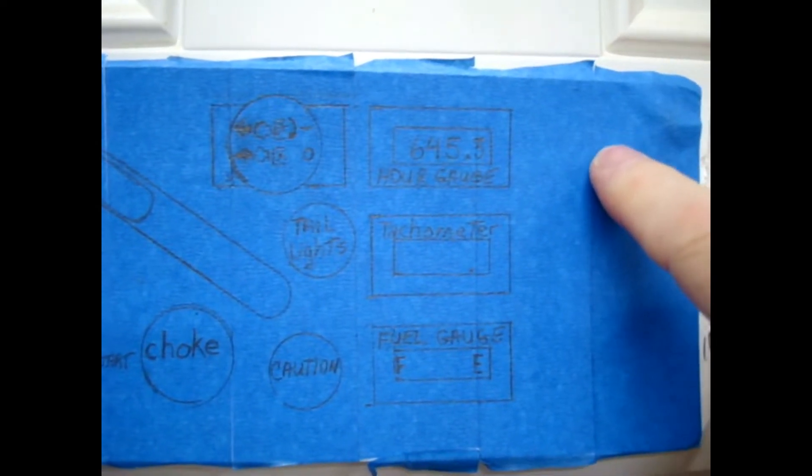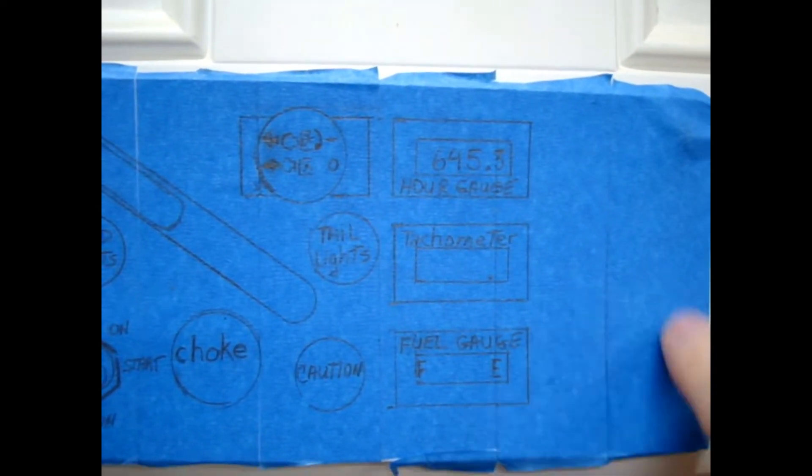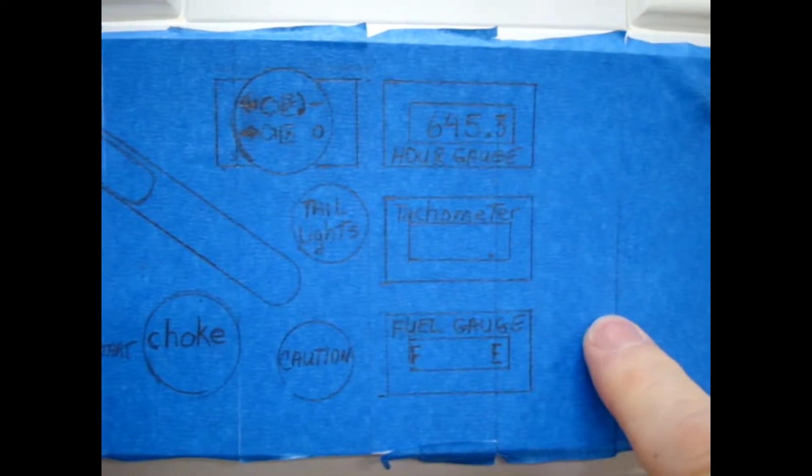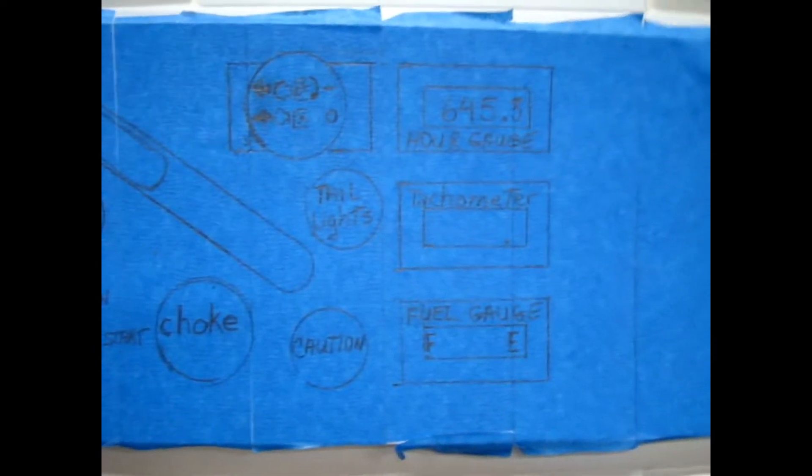Over to the right in this area right in here, we're thinking probably a fuse panel, maybe a couple other switches. But right in here we're probably thinking a fuse panel for the main, and that will probably be the complete dash panel.